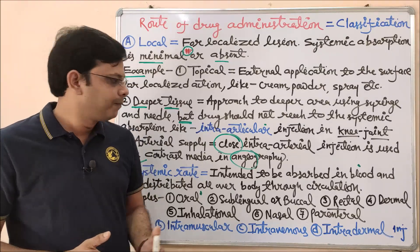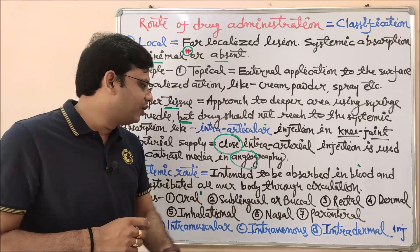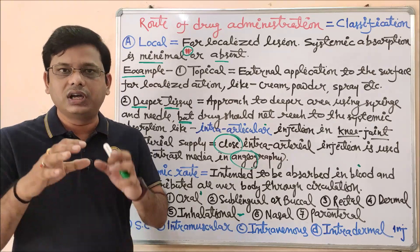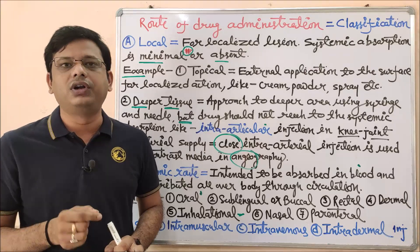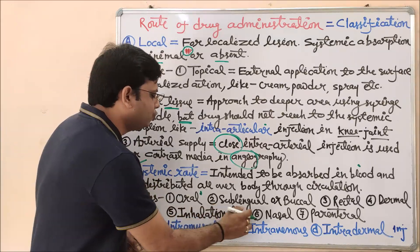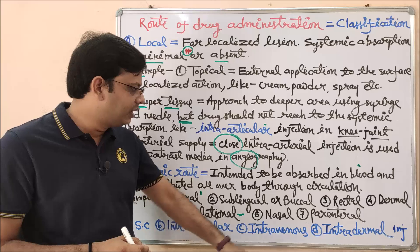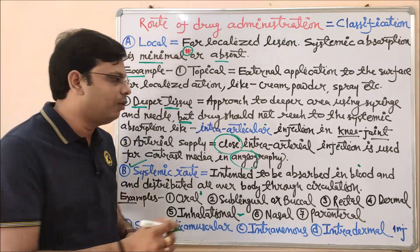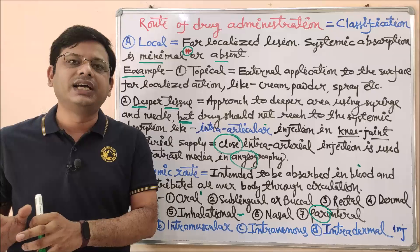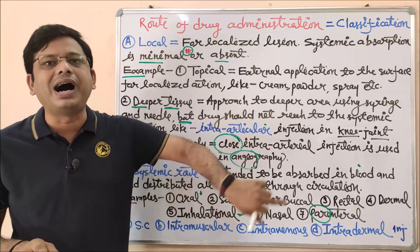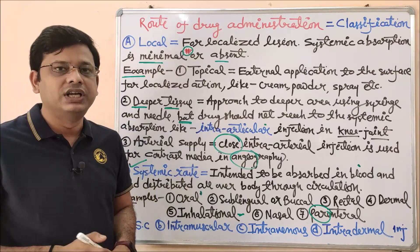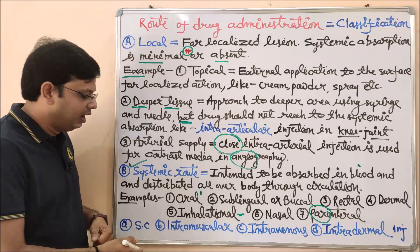The nasal route and inhalation route can be combined together, but to differentiate: the nasal route is limited to the nasal cavity only in case of congestion, while inhalation goes through the lungs. In many books these two routes are combined together. Next is parenteral: 'para' stands for other than, 'enteral' stands for via the intestine. So any route of drug administration that bypasses the oral or intestinal route is considered parenteral. Under the parenteral route there are some subtypes.